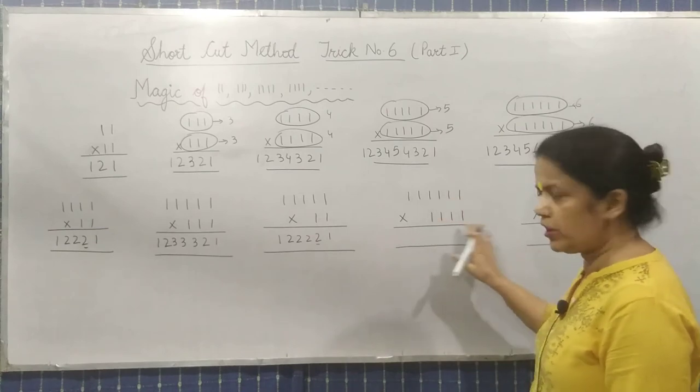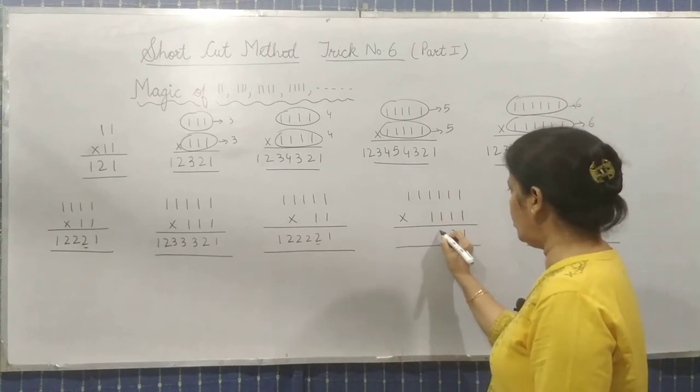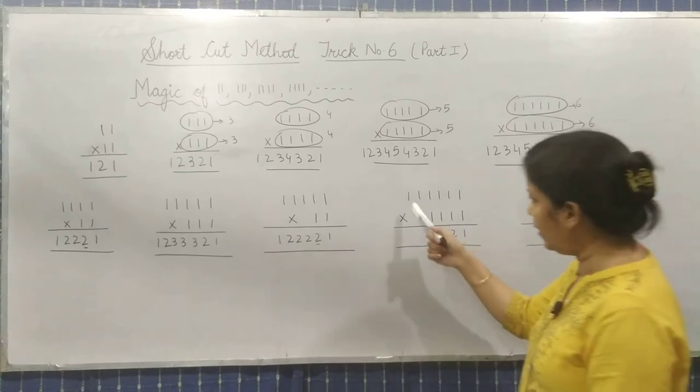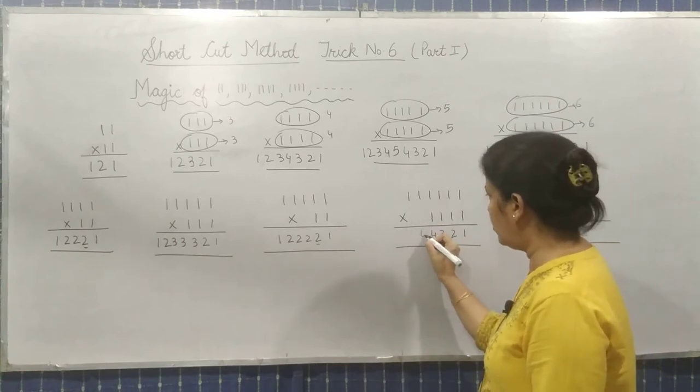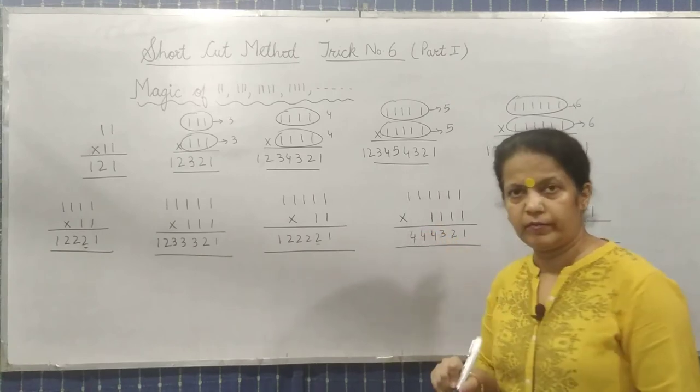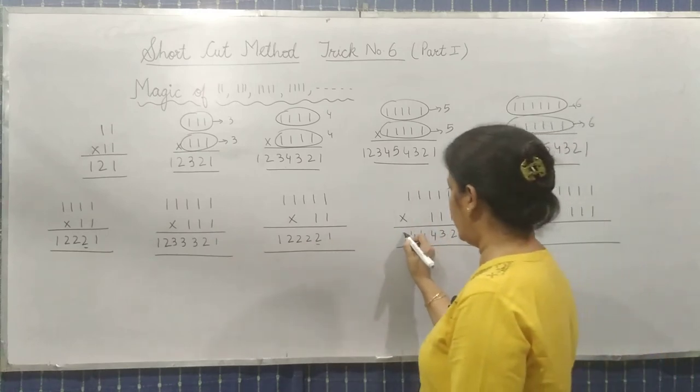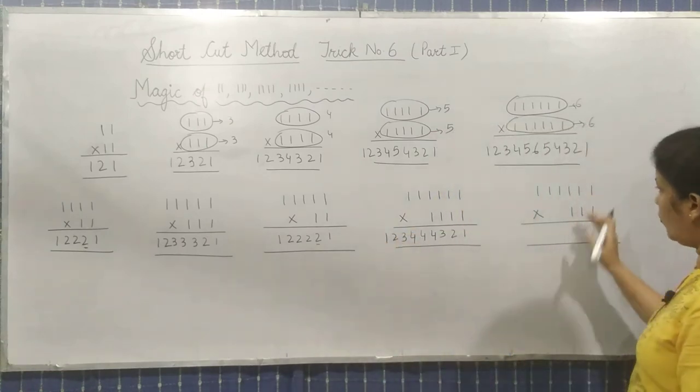Now 4 ones are same. So what will you do? 1, 2, 3, 4. You will write here. Now these 2 ones remain. So this 4, you will write it twice. Okay? Now decreasing order: 3, 2, 1. Look over here.